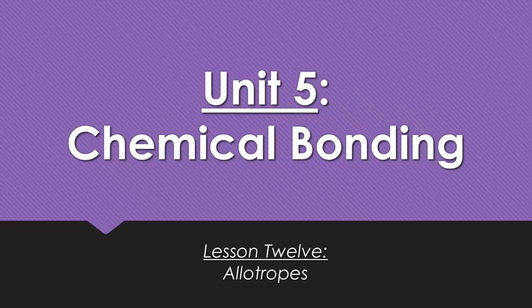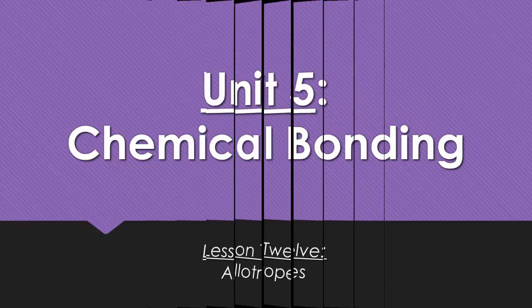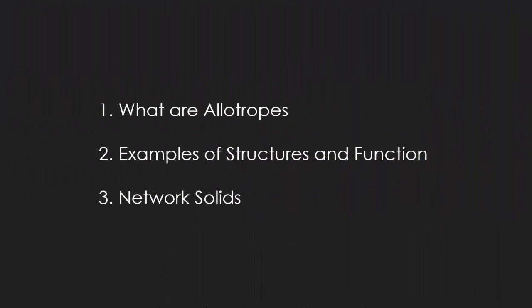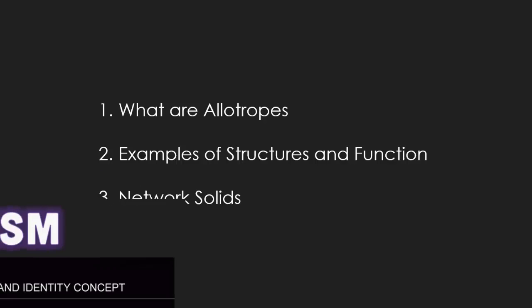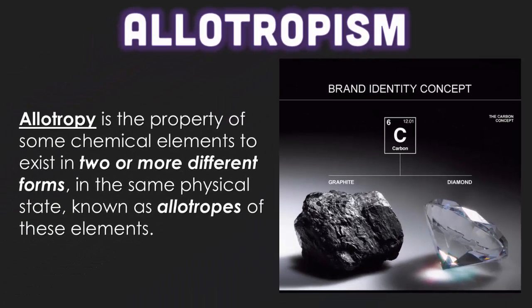Lesson 12 is on allotropes. We're going to start with what allotropes are, then talk about examples, and finally discuss network solids. Allotropy is a property of some chemical elements to exist in two or more different forms in the same physical state, known as allotropes of these elements.